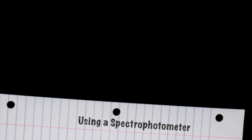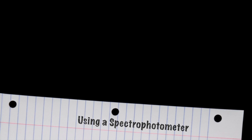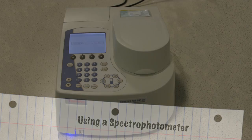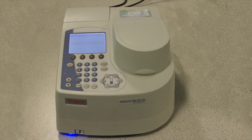This video is designed to show you how to set up and to use the spectrophotometer. A spectrophotometer is an analytical instrument used to measure the intensity of a light beam at a fixed wavelength as it passes through a solution.